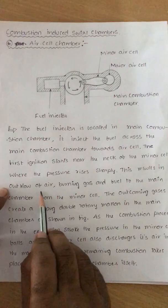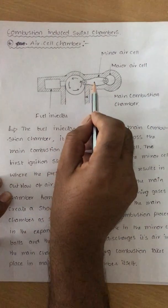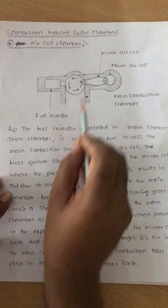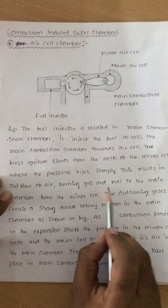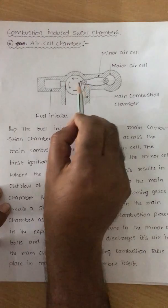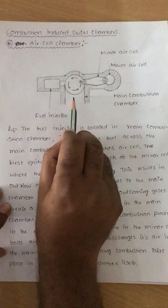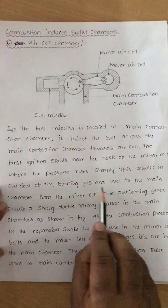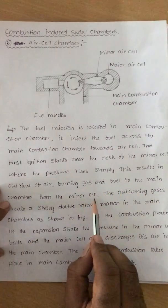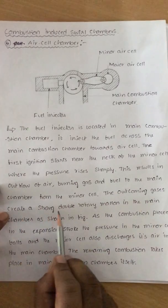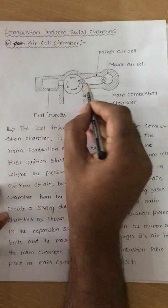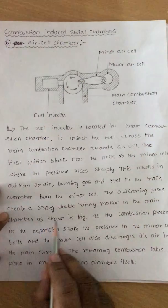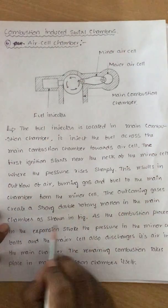This results in an outflow of air — that means, once the pressure rises, there is an outflow of air, burning gas, and products of combustion, and fuel to the main chamber. Burning gas flows to the main chamber from the minor cell. The outcoming gases create a strong double rotary motion in the main chamber, as shown in the figure.